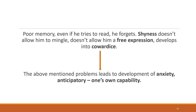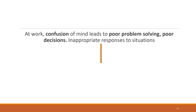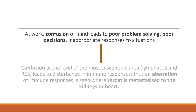If you're not able to do well, you develop an anticipatory anxiety about one's own capability. As the child grows up and becomes a young adult or proper adult, confusion at work leads to poor problem solving and poor decisions. They are fickle-minded — they cannot take decisions, cannot solve problems, and give inappropriate responses.